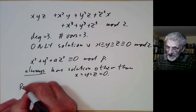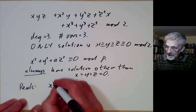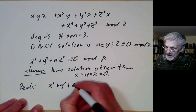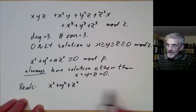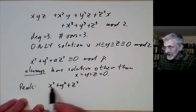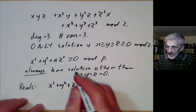Notice this fails over the reals. In the reals, if we take x² + y² + z², then this only has the 0 solution. In fact, we can have any number of variables we like over the reals and it will still only have the 0 solution.